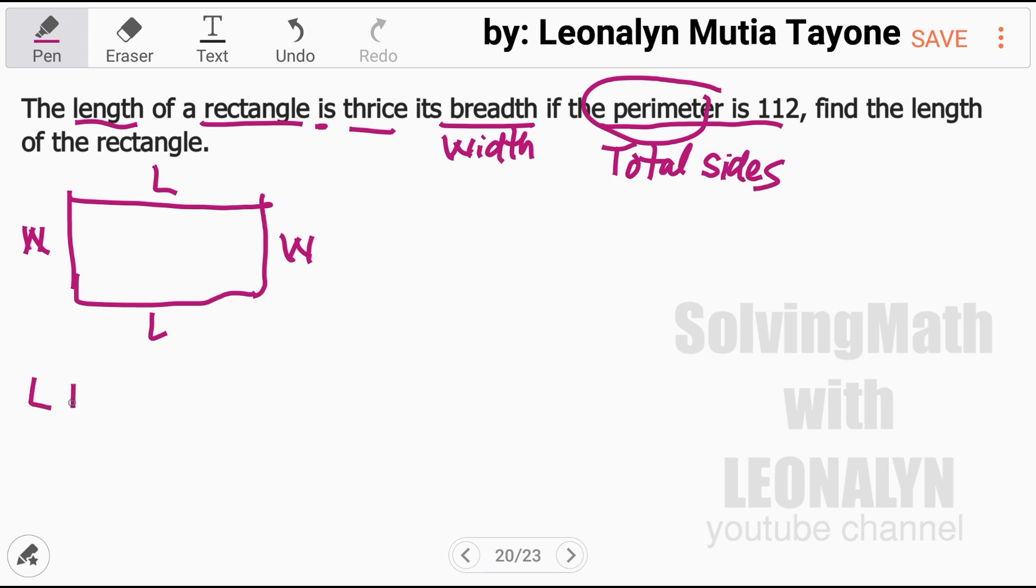This is the length, this is the width. The perimeter means the total of all sides. Therefore, that is length plus length, two lengths. Width plus width, two widths.